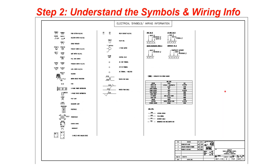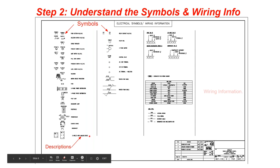Next you'll see the symbols and wiring section, because you want to understand what these symbols are representing. We always include electrical symbols and wiring information. Here's an example of the symbols themselves with their descriptions. We also include a wiring information table that tells you all you need to know about the type of wire used, the colors, and so on.